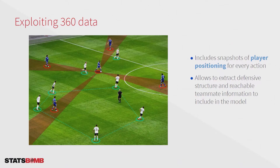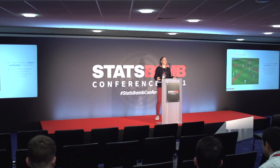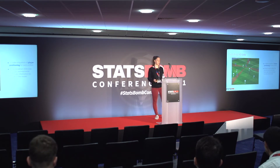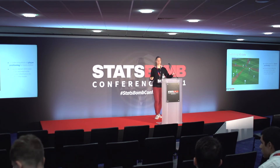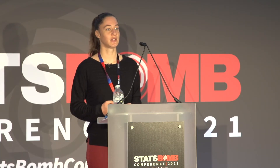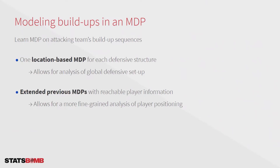Previously it wasn't possible to include this, but now with the StatsBomb 360 data, which includes snapshots of player positioning for every action, it is actually possible. This data allows us to extract the defensive structure at each action and reachable teammate information — where the reachable teammates were positioned on the field. We have two types of data to add, so we create two types of models, each allowing a different kind of analysis.